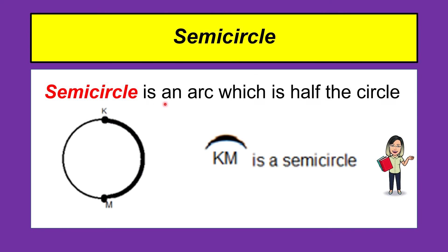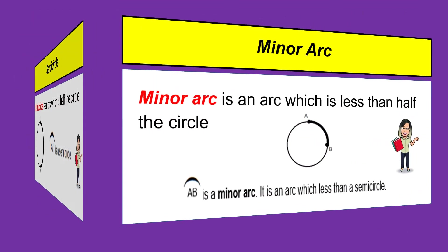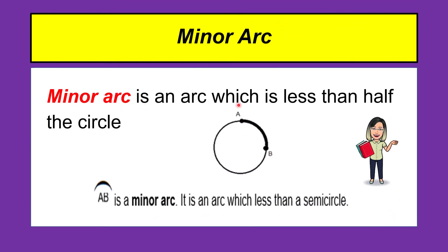A semicircle is an arc which is half the circle. If the arc is half the circle, it is a semicircle. A minor arc is an arc which is less than half the circle. If the arc is less than half the circle, arc AB is a minor arc.